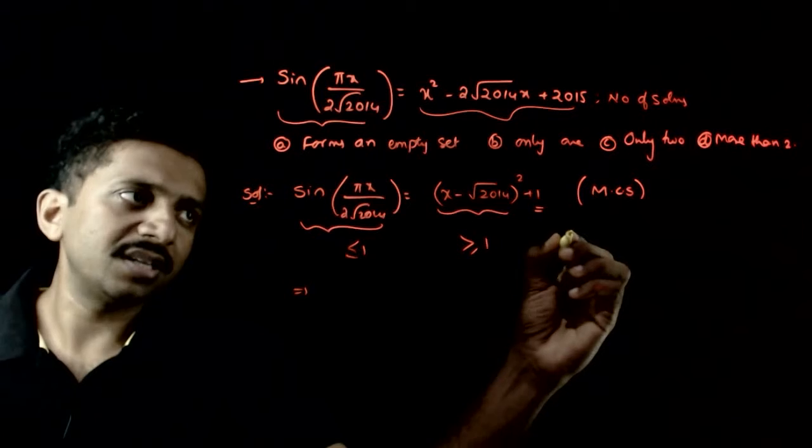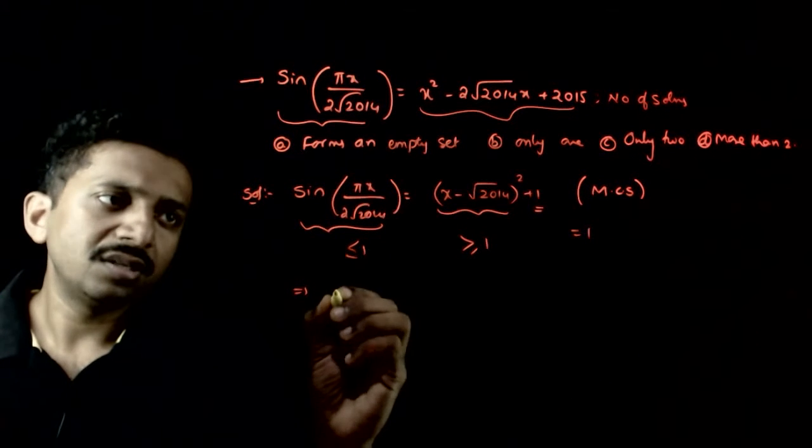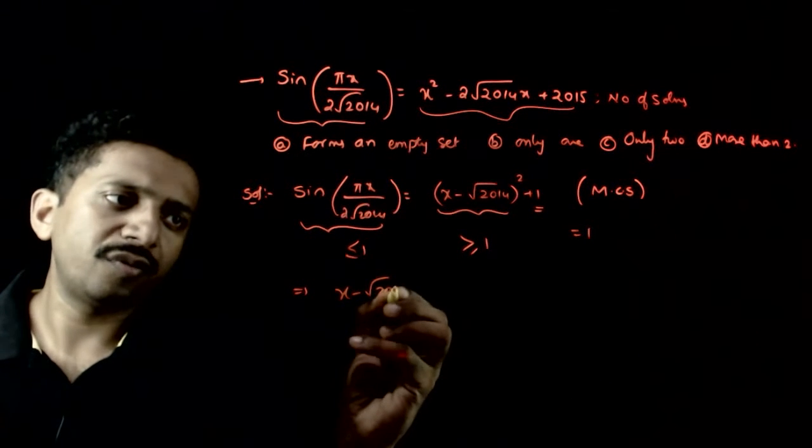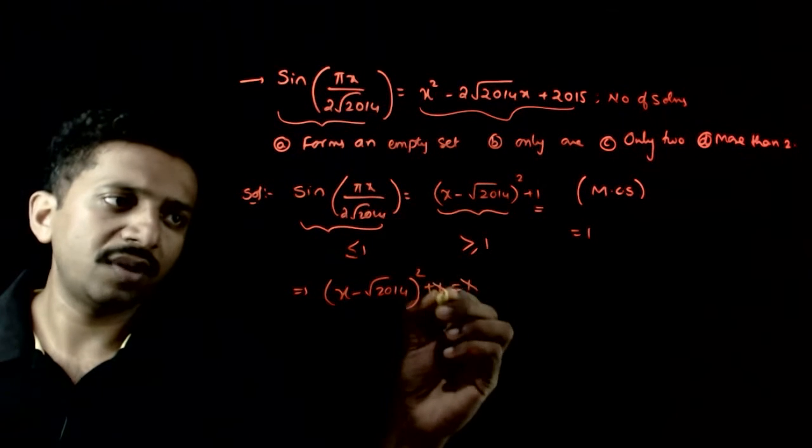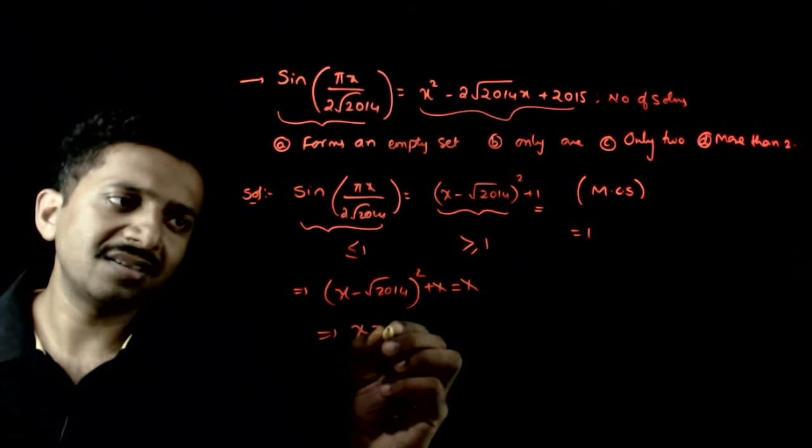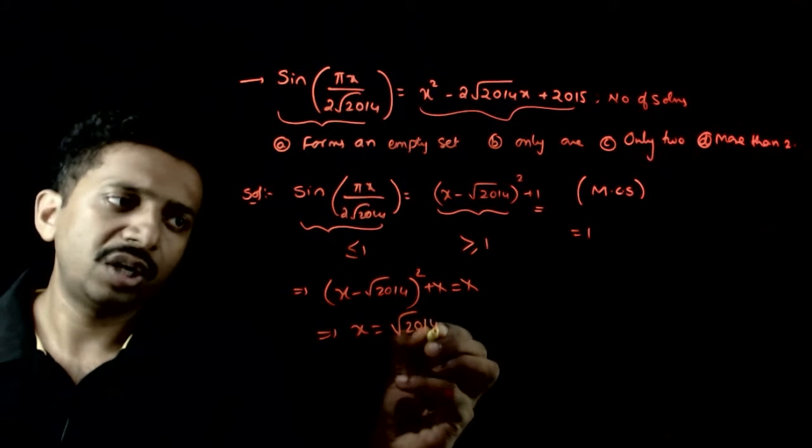So (x - √2014)² + 1 should be equal to 1. One cancel ho gaya. This implies x is equal to √2014.